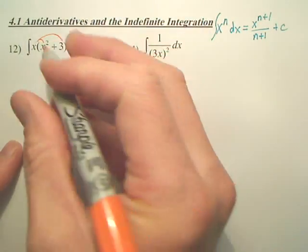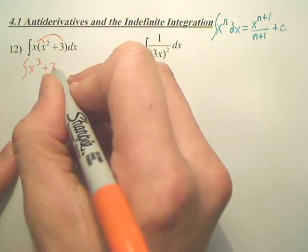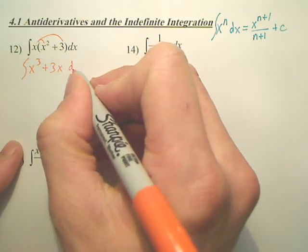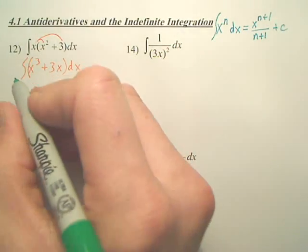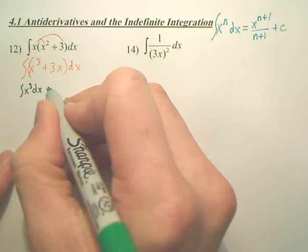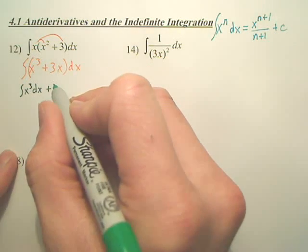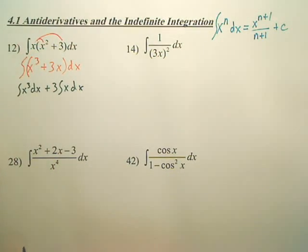First thing we want to do is distribute. So we now have x to the third plus 3x, dx. From there, to integrate this, basically you integrate each piece. You can write this out — it's kind of not necessary, but you're technically doing this. I'm writing it for the sake of technicalities. Are we okay with that? That's technically what you're doing right now — you separate it.